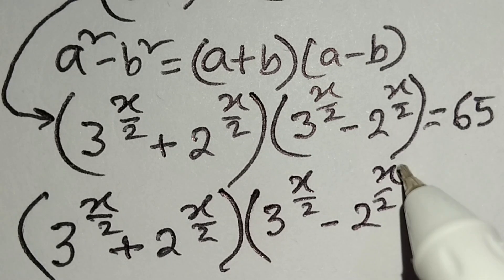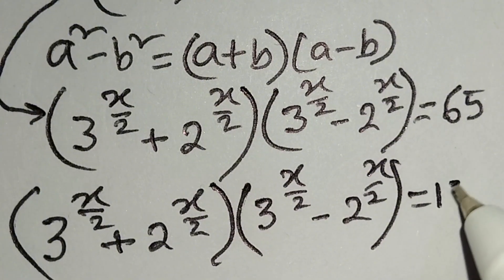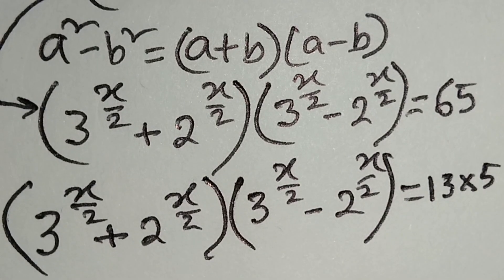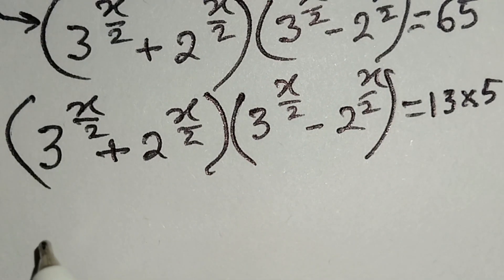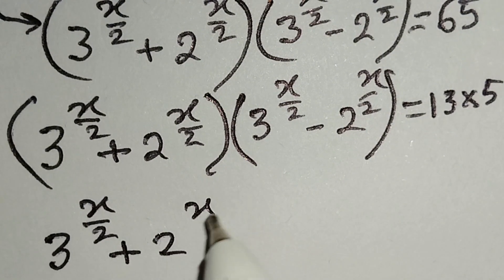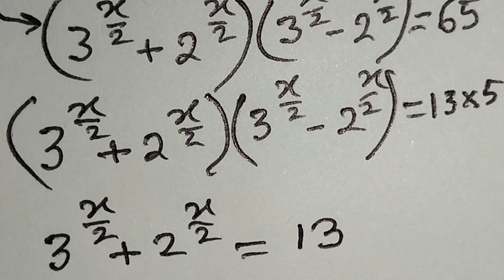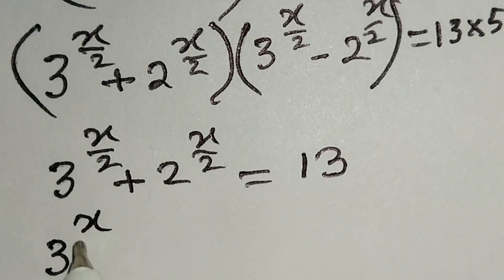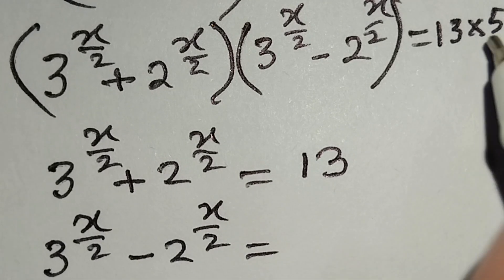We can write 65 as 13 times 5. So we get: 3 to the power (x/2) plus 2 to the power (x/2) is equal to 13, and 3 to the power (x/2) minus 2 to the power (x/2) is equal to 5.